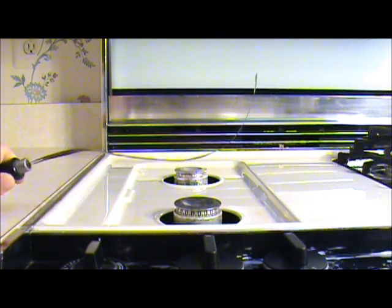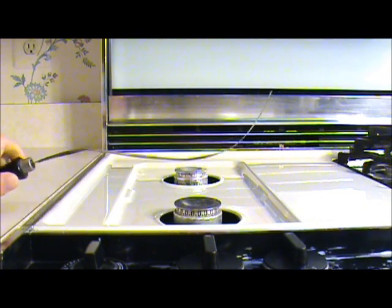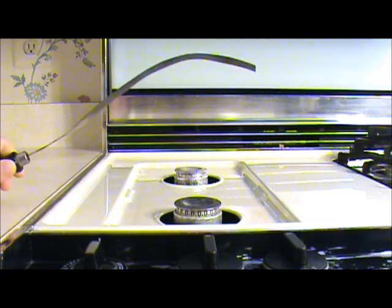When the strip cools, the side with larger alpha also contracts more, so the strip uncurls.